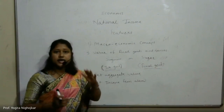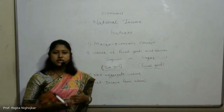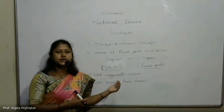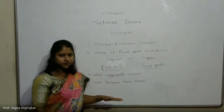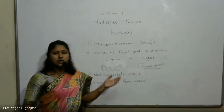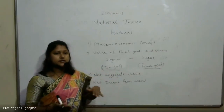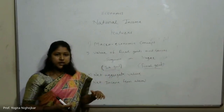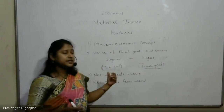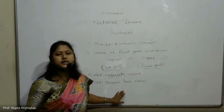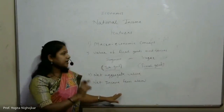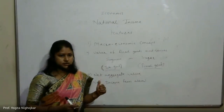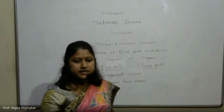While calculating national income, the net income from international trade is included — that is, income from exports, receipts, and payments from foreign trade and foreign transactions. If the net income from abroad is negative, that amount is deducted from national income.